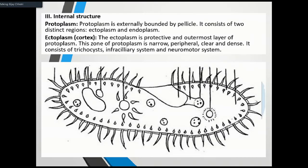Today we are going to discuss part two. Part two is the internal structure of Paramecium caudatum. The internal structure of Paramecium caudatum — the first part is protoplasm.